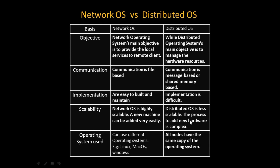Regarding the operating system used: in a network operating system, different operating systems can be used by the various nodes — one machine can use Linux, another macOS, another Windows, just like our personal PCs and laptops. In a distributed operating system, all nodes have the same copy of the operating system, since they share the same hardware resource.